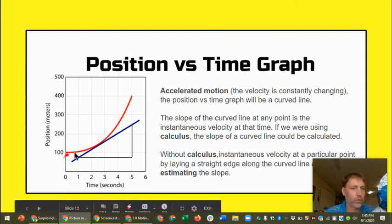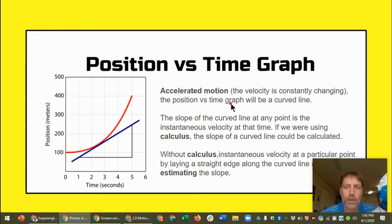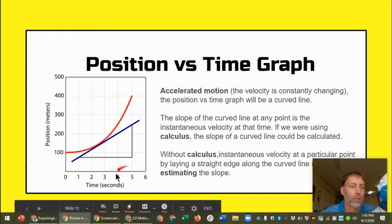So that's what's called accelerated motion. The velocity is constantly changing. And the graph is going to be a curved line because you're increasing, you're traveling more distance, a steeper slope over the same interval of time.